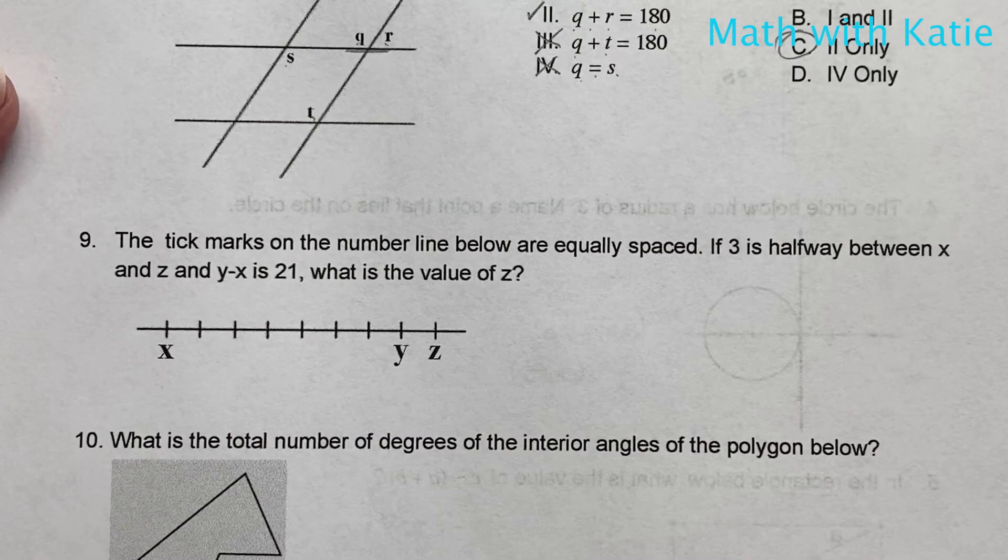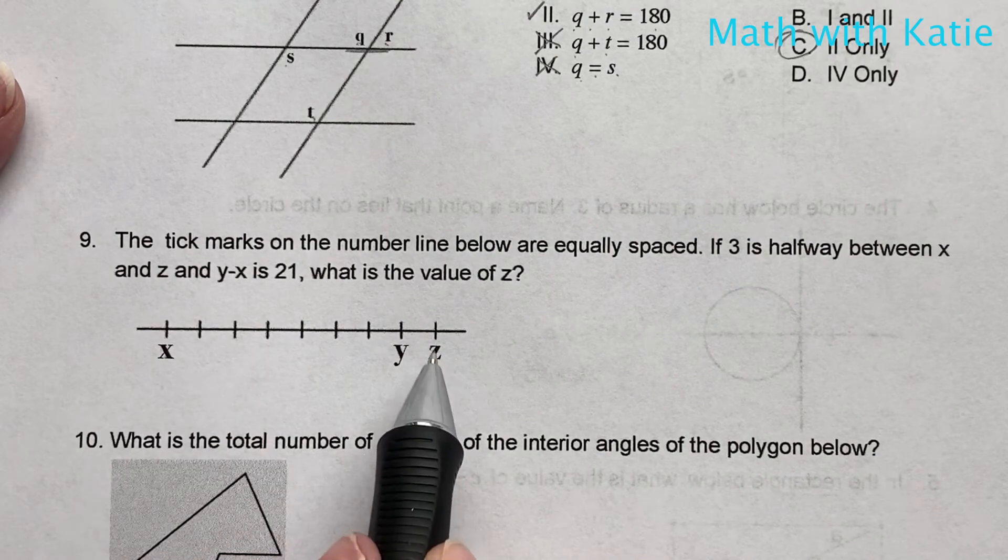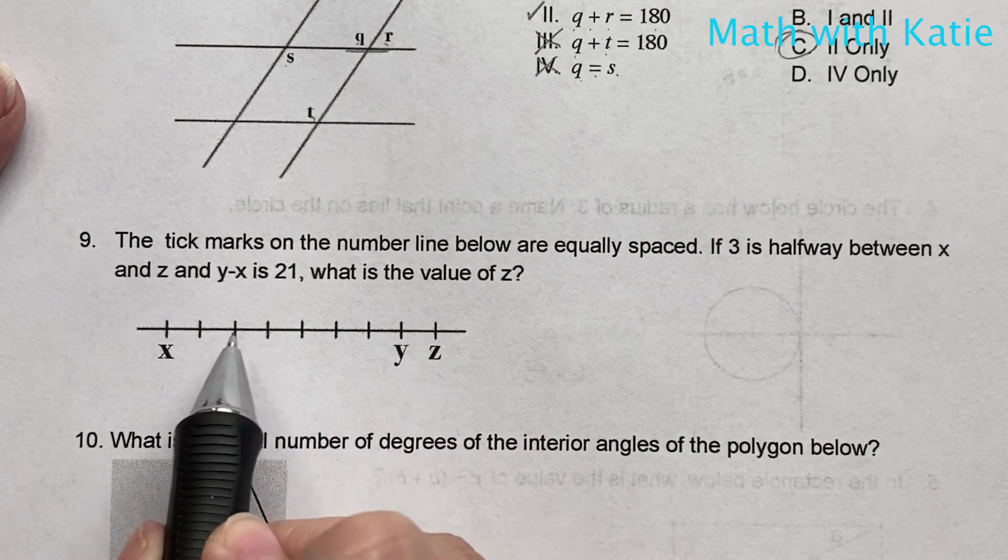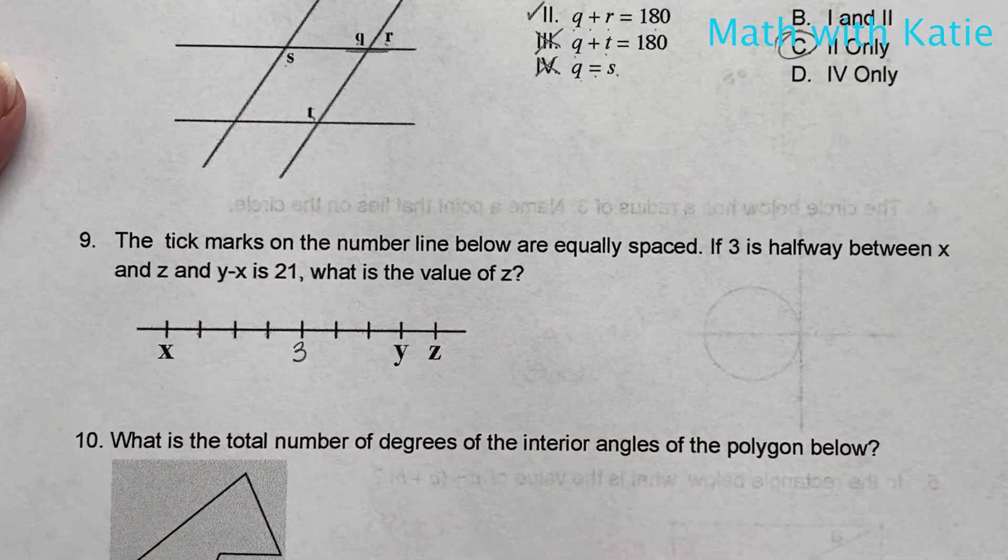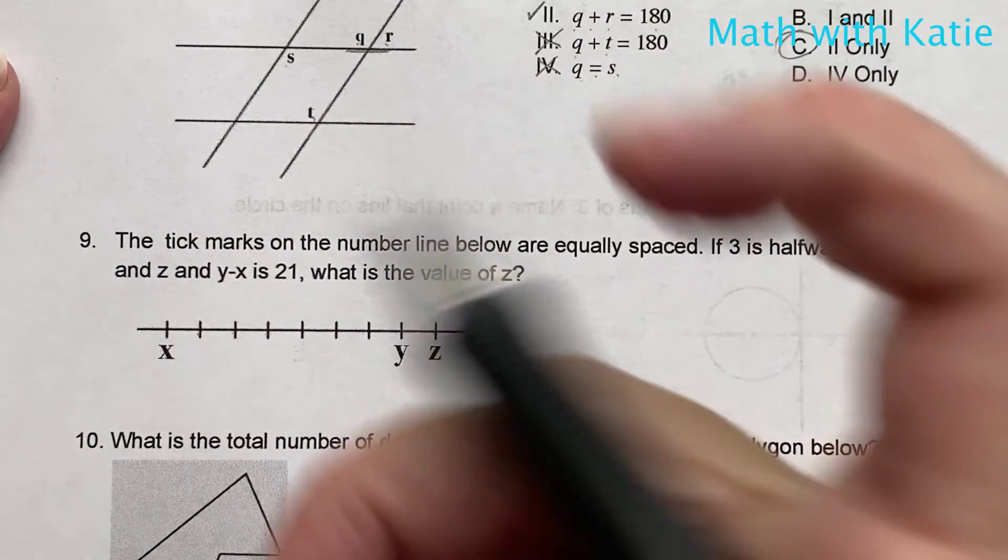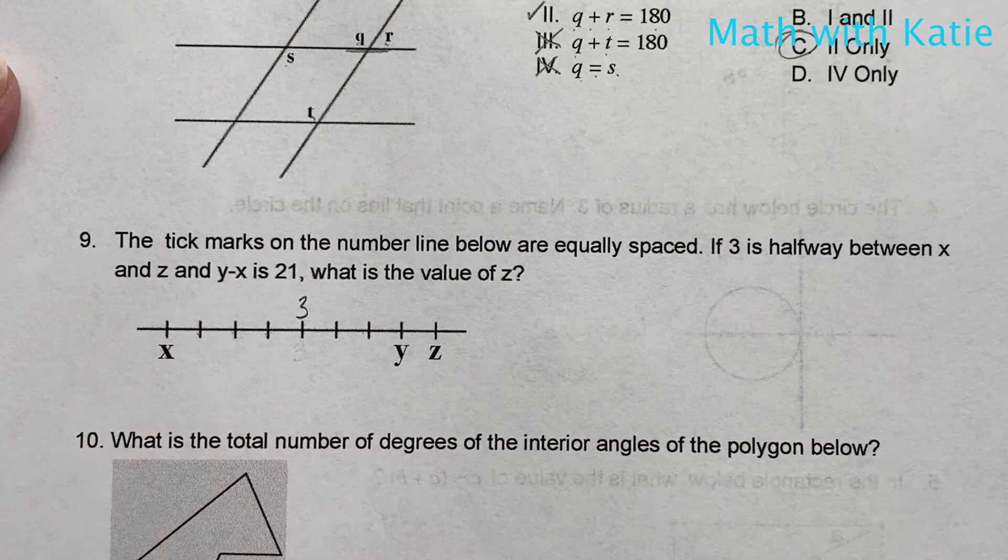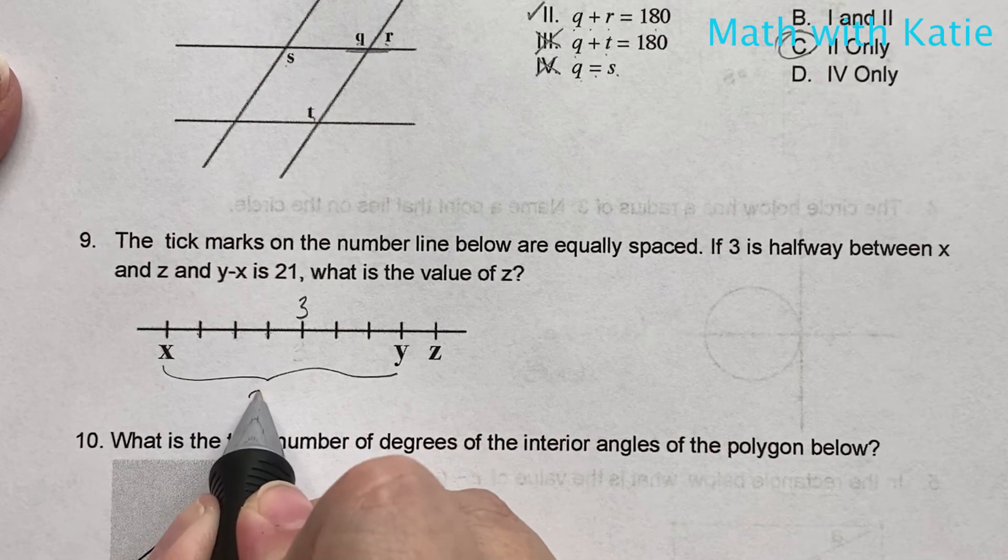The tick marks on a number line below are equally spaced. If 3 is halfway between x and z. So x and z and 3 is halfway. So one, two, three, four, five, six, seven, eight. So four, one, two, three, four. So that's 3. Actually, I'm gonna put it on top. And y minus x is 21. So this whole thing here is 21.